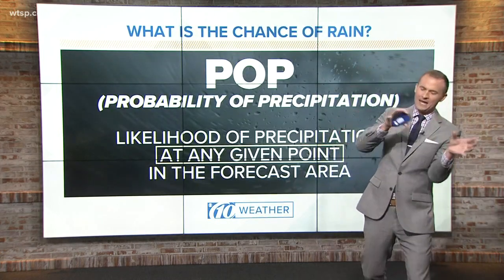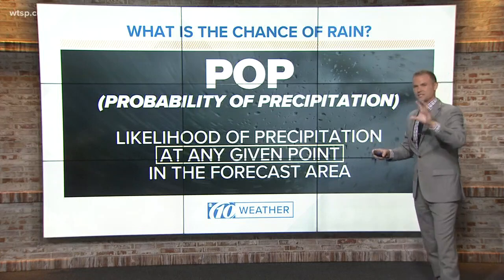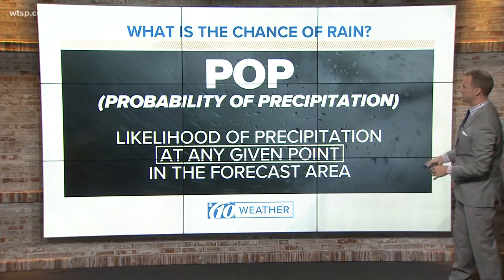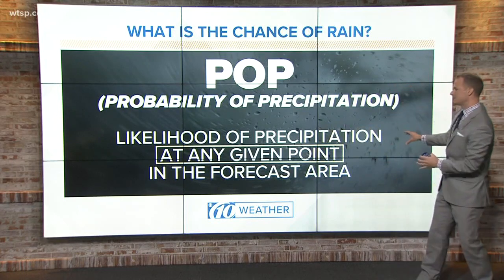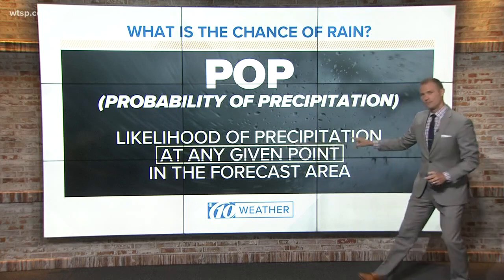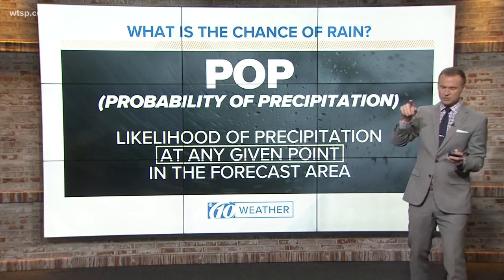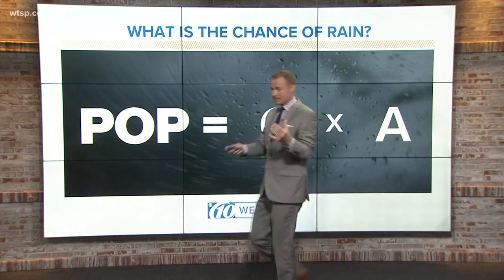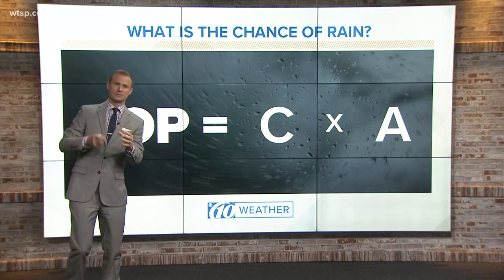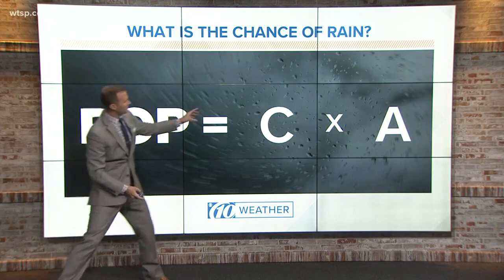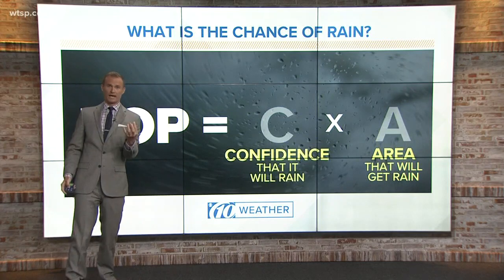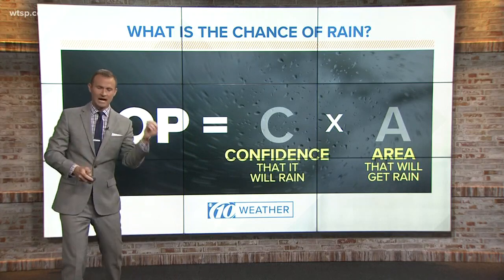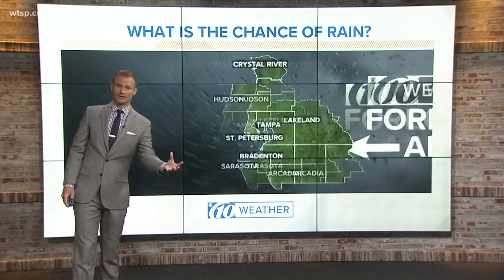So here we go. The chance of rain — the way meteorologists define this — it's not so much the chance of rain. It's the POP, or the probability of precipitation, which means the likelihood that precipitation is going to occur at any given point in the forecast area. It's not just one specific area, but any given point in the forecast area. And the way we come up with this is a calculation — not an exact calculation, but in our minds we calculate the confidence that it's going to rain in the forecast area, and then how much of that area is going to get rain.